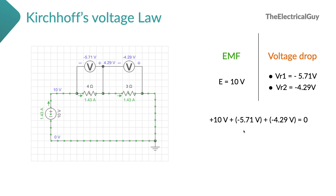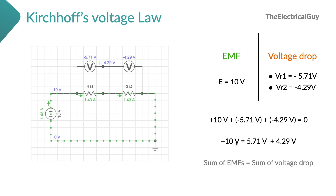We can conclude that the sum of EMFs and the sum of voltage drops in the circuit is zero. Going one step further and solving this equation — shifting the negative values to the right hand side — positive 10 volts equals positive 10 volts. That means the sum of EMF equals the sum of voltage drop in the circuit. If you understood this, you have understood Kirchhoff's voltage law.